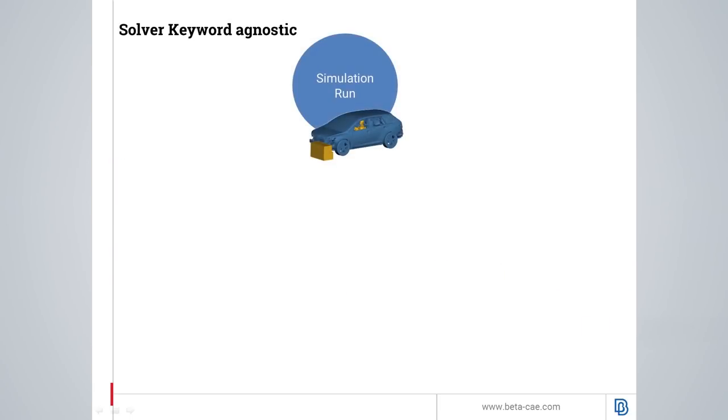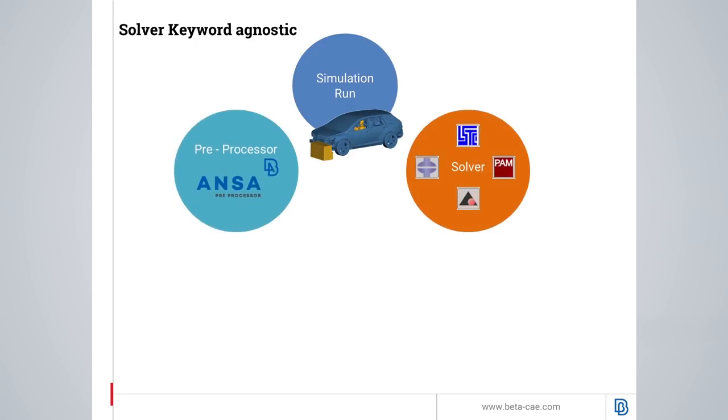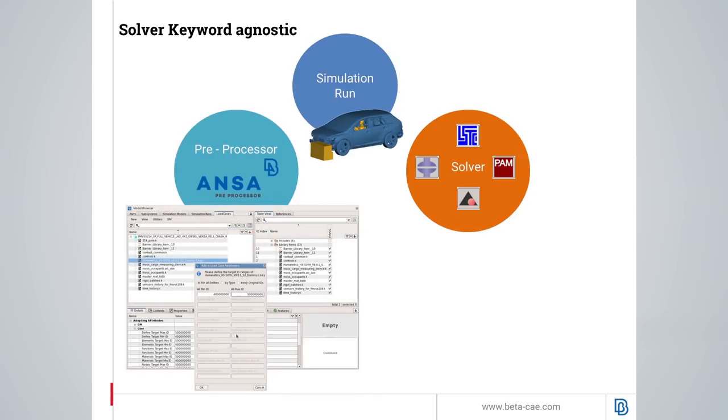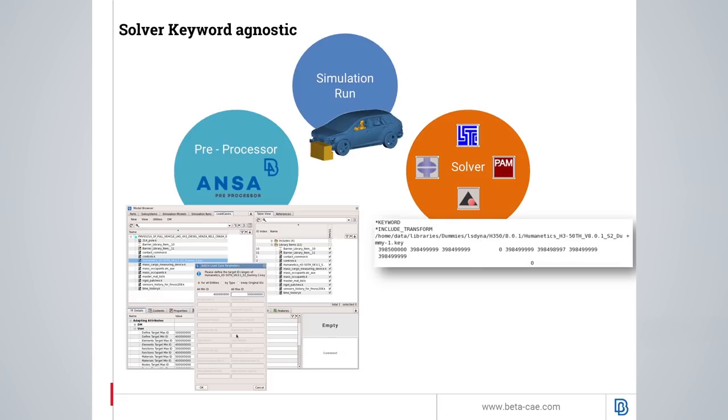While working inside ANZA, the model can be easily set up in order to be solved using different solvers. In ANZA, during the workflow process, one can apply actions such as positioning and numbering to specific entities which will be, as mentioned before, solver agnostic, taking into consideration only the necessary engineering data, leaving ANZA to work in the background in order to output the respective keywords for each solver.